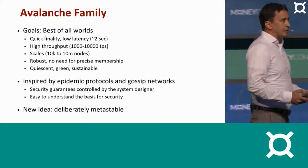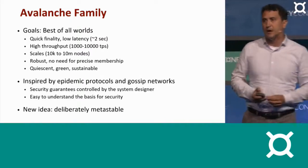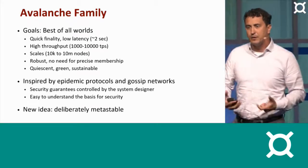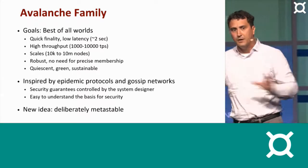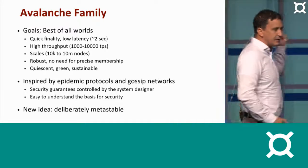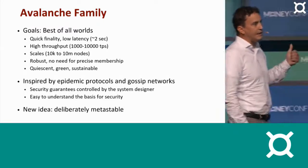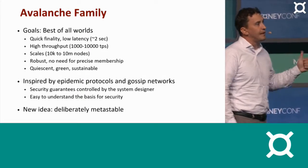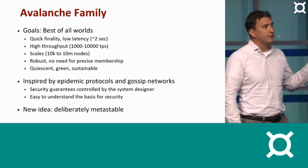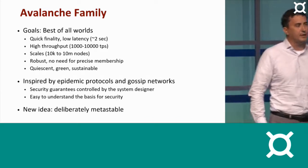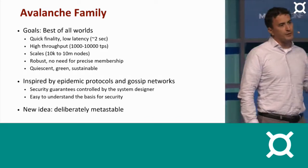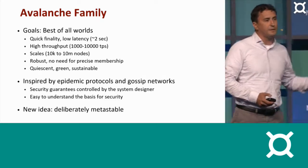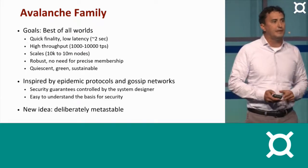So now, what about this new thing? Well, about a month ago, this paper dropped. And this paper has an amazing new feature — it combines the best of both worlds. It combines the best of Nakamoto with the best of classical consensus. So it gives you quick finality and very low latency, about two seconds across the globe for finality. After two seconds, you know your payment is done — you're at the checkout counter, you're done, you're out of there. It gives you high throughput, thousands of transactions per second. It scales very easily from 10,000 nodes on up to maybe 10 million nodes.